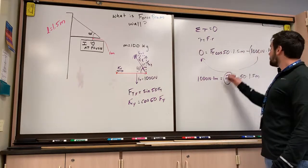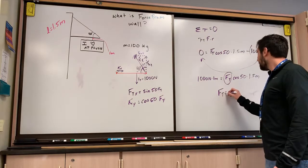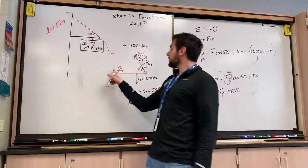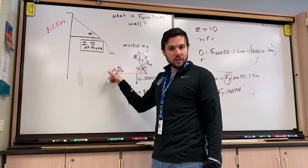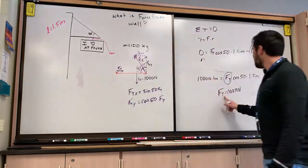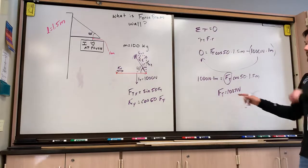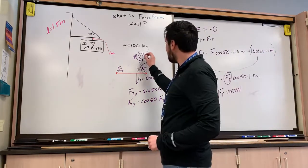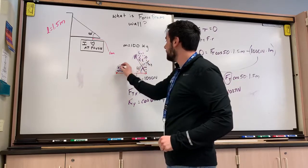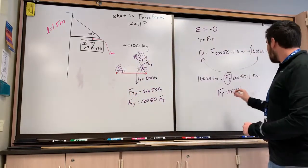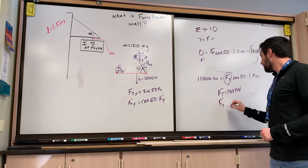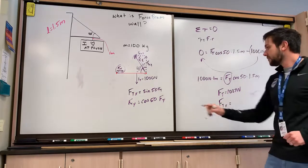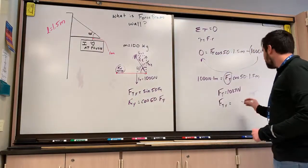So my force of tension is 1,037 newtons. But the problem is asking for the normal force coming out of the wall. So I can't just leave it as my force of tension here. I need to now recognize that my force of tension in the x direction is equal to my normal force here. So I'm going to say, okay, FTX is equal to sine of 50 times FT.